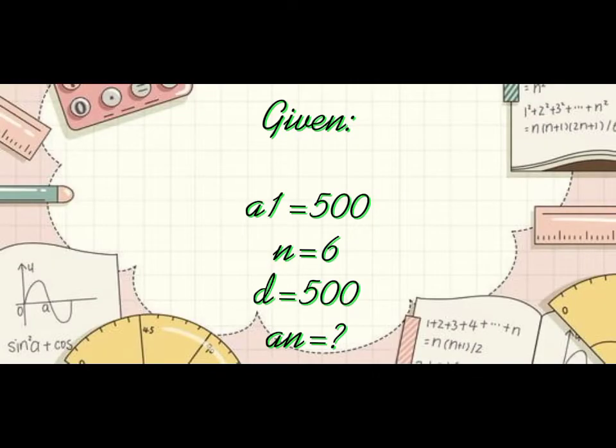In this situation, we are looking for the salary at the 6th week. So, we have to solve for that. Given A sub 1 equals 500, N equals 6, and D equals 500.